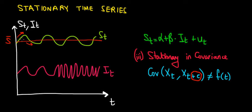The covariance is showing us the relationship between sales at a certain point in time — let's call this T1 — and at the next point in time, T2. The sales at T1 and at T2 are positively correlated. So if we have a sale above $10,000 in period 1, we're still having a sale above $10,000 in period 2. That's a positive covariance.